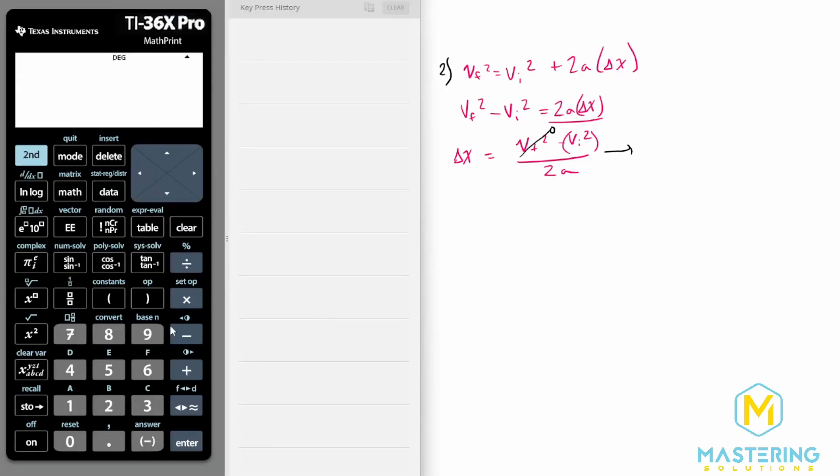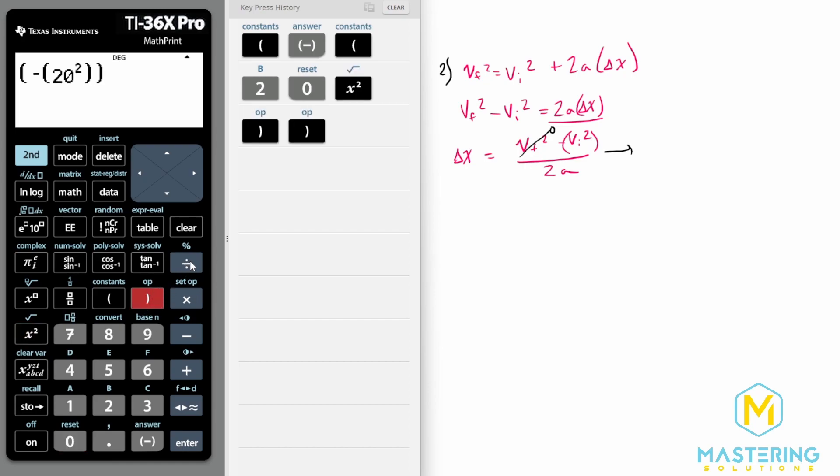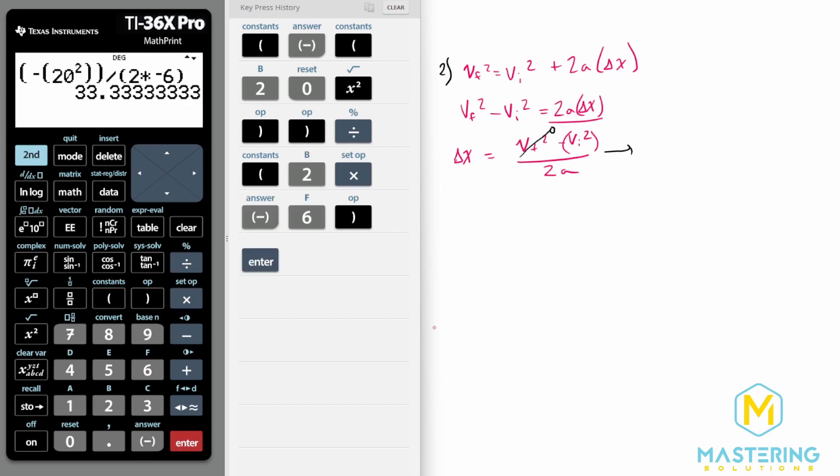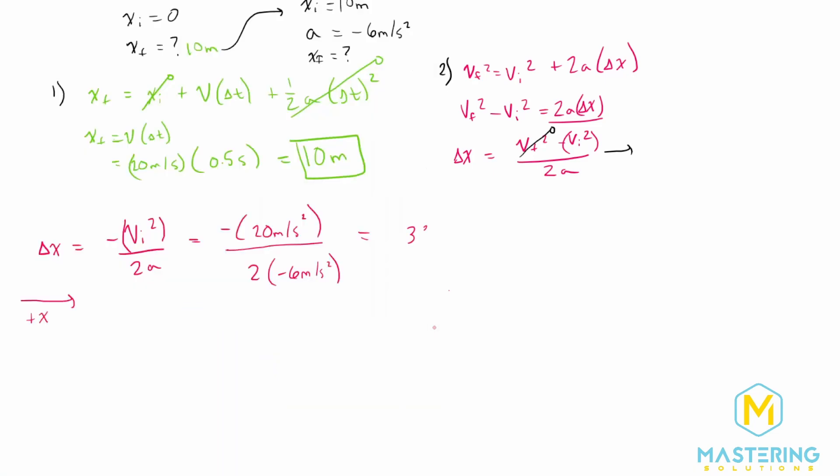So let's come to our calculator, and we have a negative 20 squared, and then that will be divided by 2 times a negative 6. The distance that she went for this section is 33.33 meters, so 33.3 meters.